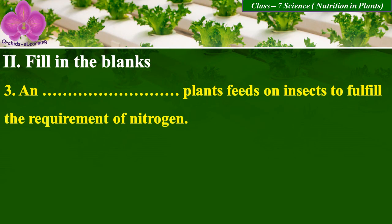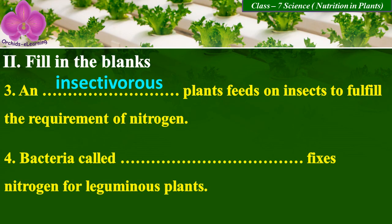Number three — insectivorous plants feed on insects to fulfill the requirement of nitrogen. Number four — bacteria called rhizobium fixes nitrogen for leguminous plants.